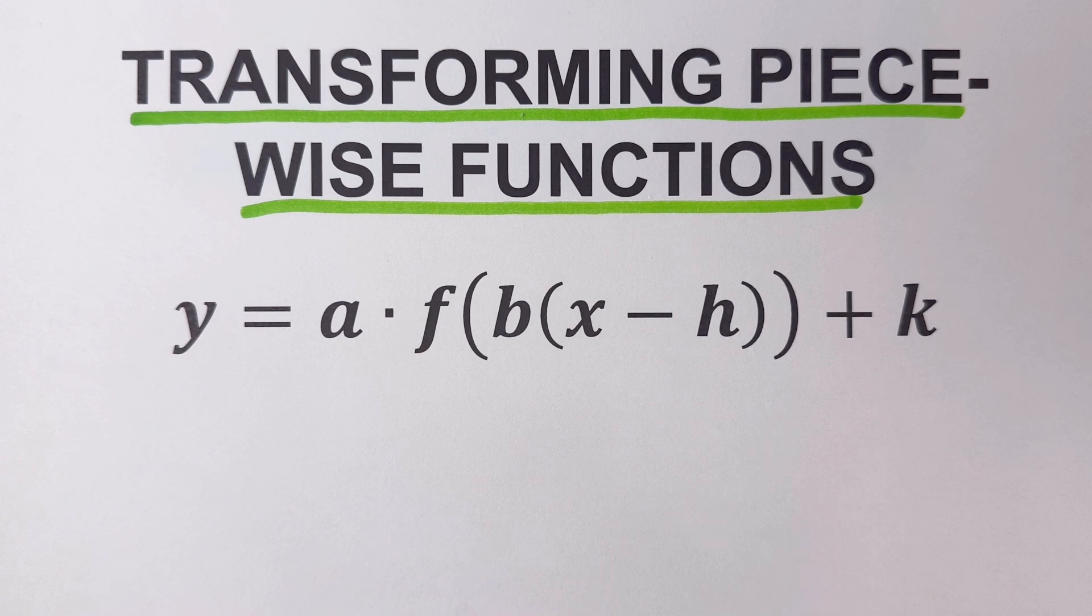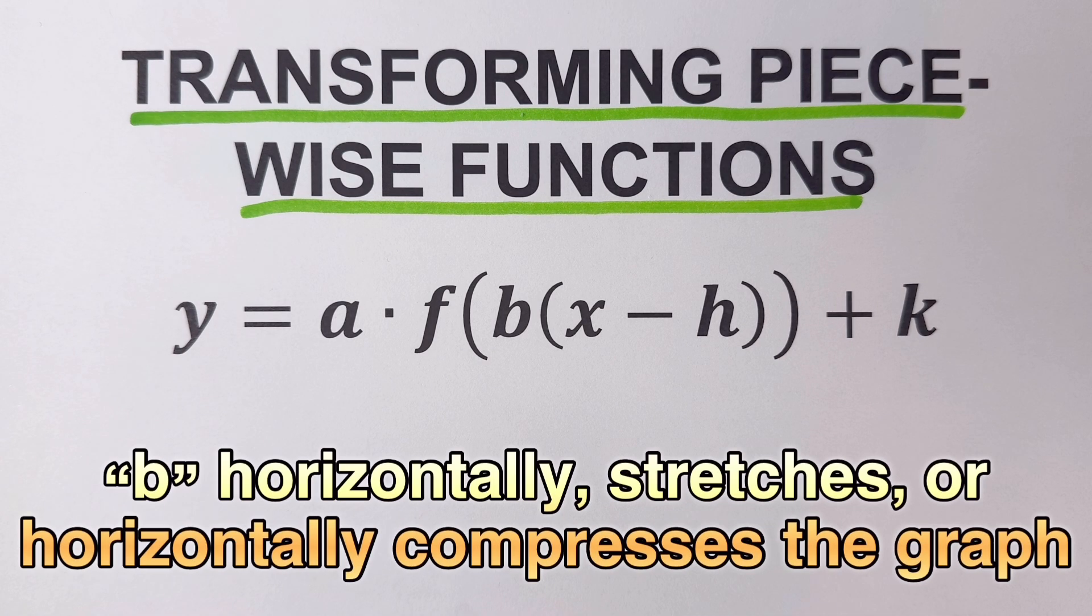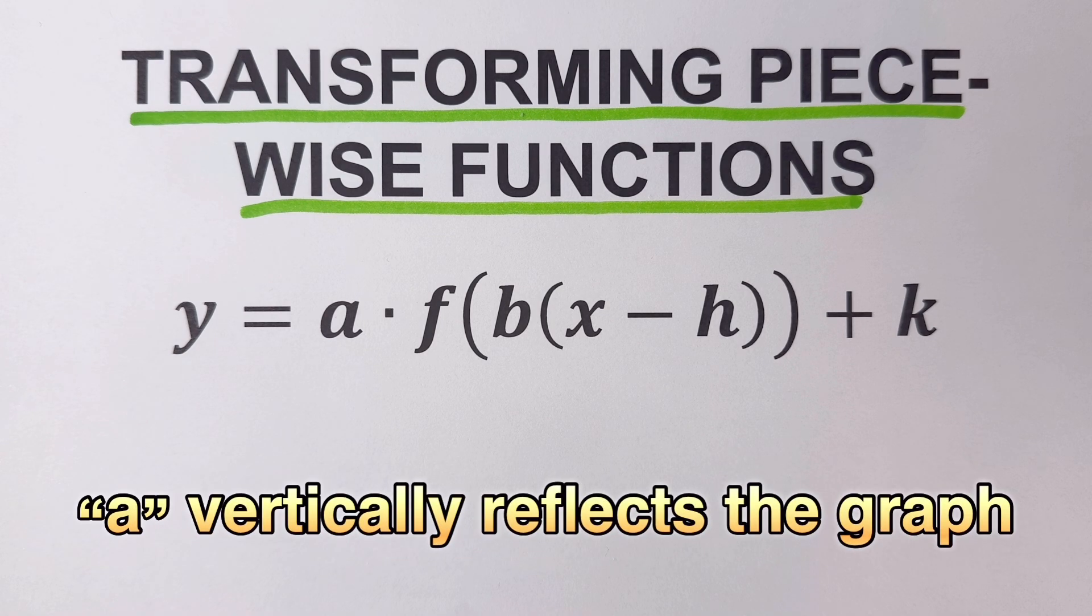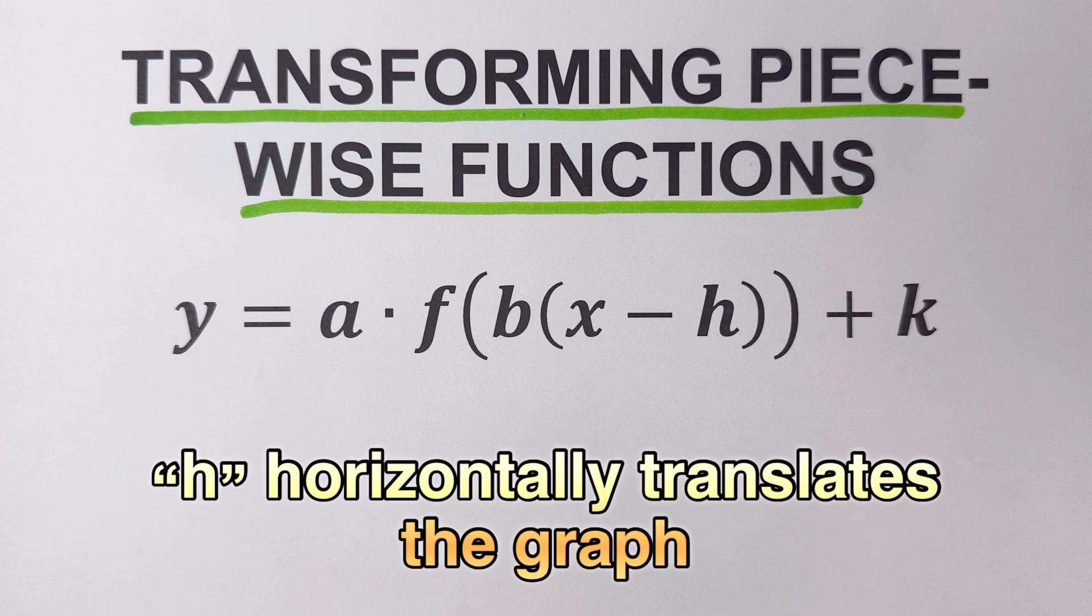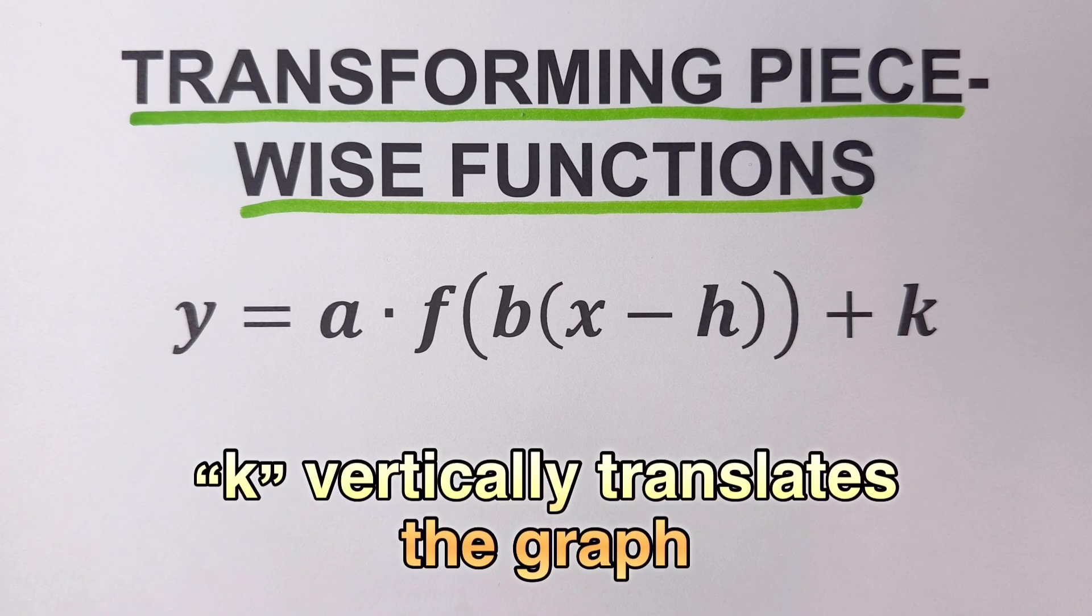Parameter a vertically stretches or compresses the graph and can reflect it upside down, while parameter b horizontally stretches or compresses and reflects the graph side to side. Parameter h horizontally translates the graph, while k vertically translates the graph.